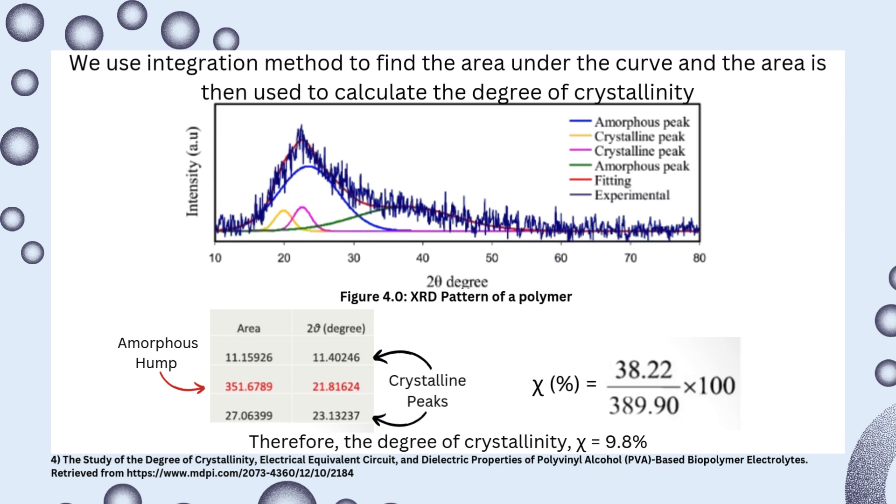In this case, the area of crystalline peaks of the XRD pattern is 11.15926 and 27.06399. Thus, the sum of the area of the crystalline peaks is 38.22325, which is around 38.22. The area of the amorphous hump is 351.6789, which is around 351.68. Therefore, the sum of the areas of crystalline peaks and amorphous hump is 389.90. To find the degree of crystallinity, the sum of the crystalline peaks is divided by the sum of crystalline peaks and amorphous hump: χ(%) = 38.22/389.90 × 100 = 9.80 percent.